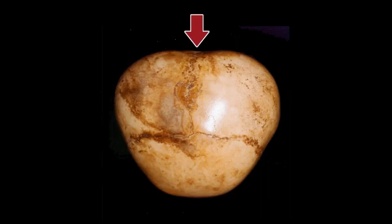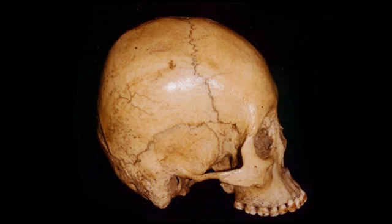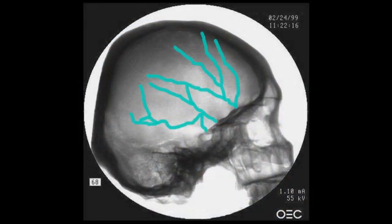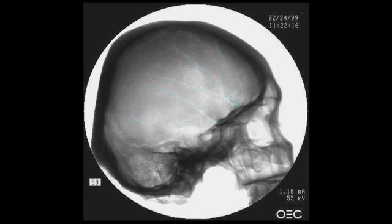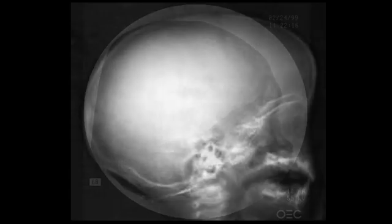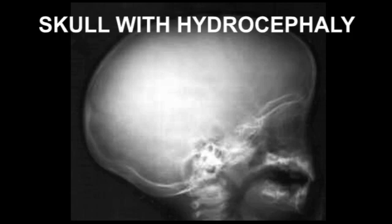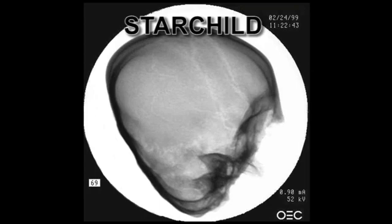Normally in a human there are vascular markings on the inner table of the skull because blood vessels run between the brain and the inner table. In hydrocephalus, these are absent because the increased intracranial pressure obliterates those markings as the brain presses against the inner table. Dr. Brzezinski noted that those vascular markings were present on the x-rays, which rules out the possibility of this being a hydrocephalus patient.